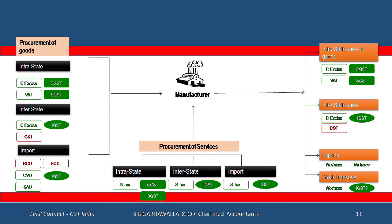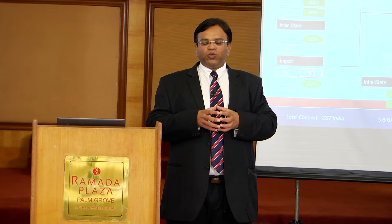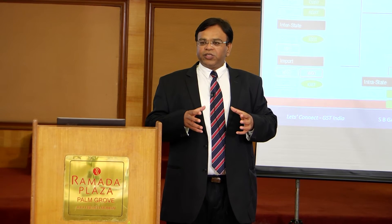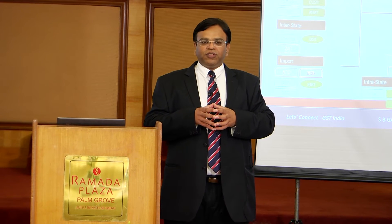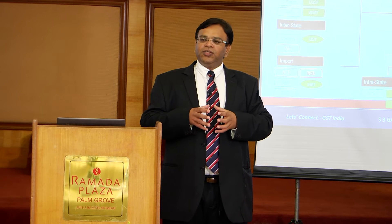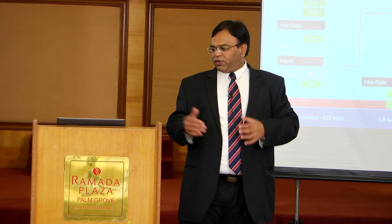Those are things of the past — there will be no C-form. Instead of CST you will have IGST, which will be fully creditable to your customers. On exports, today there are no taxes, and moving forward also there will be no tax. On stock transfers, today there's an F-form and no tax; moving forward there's a debate — one view says stock transfers will be taxed under IGST, another says they are not taxed. We'll discuss this in detail in specific slides.